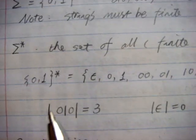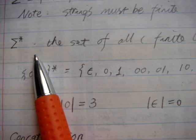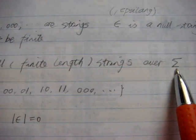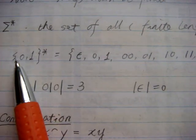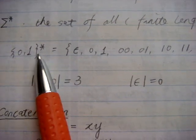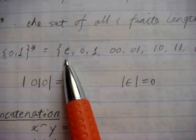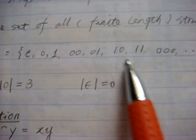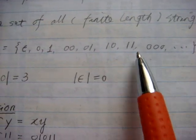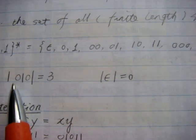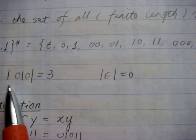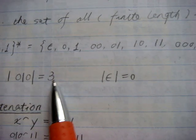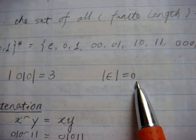Next, we're going to look at sigma star — this is a very important concept. It is the set of all finite-length strings defined over the alphabet. For example, if the alphabet is {0, 1}, then sigma star contains the empty string, as well as strings like '0', '1', '00', '01', '10', '11', and so on — this set can contain many elements. We use two vertical lines to represent the length of a string. For example, '010' has length 3, and the empty string has length 0.